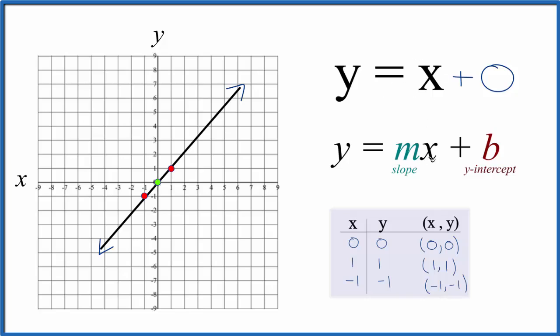For the slope, there's also nothing written in front of the x, but we assume there's a 1 there. And we could call this 1 over 1. That's still 1, but now we could say rise over run. So we're going to rise 1 and go over run 1. So rise over run.